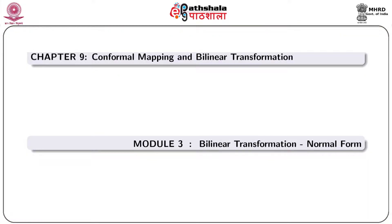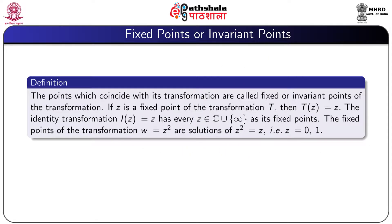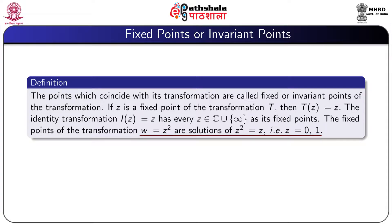We now start our presentation on bilinear transformation normal form. First we define fixed point or invariant points. The points which coincide with their transformation are called fixed or invariant points of the transformation. If Z is a fixed point of the transformation T, then T(z) equal to Z. The identity transformation I(z) equal to Z has every Z in the extended complex plane as its fixed points. The fixed points of the transformation W equal to Z squared are solutions of Z squared equal to Z, that is Z equal to 0 and 1.